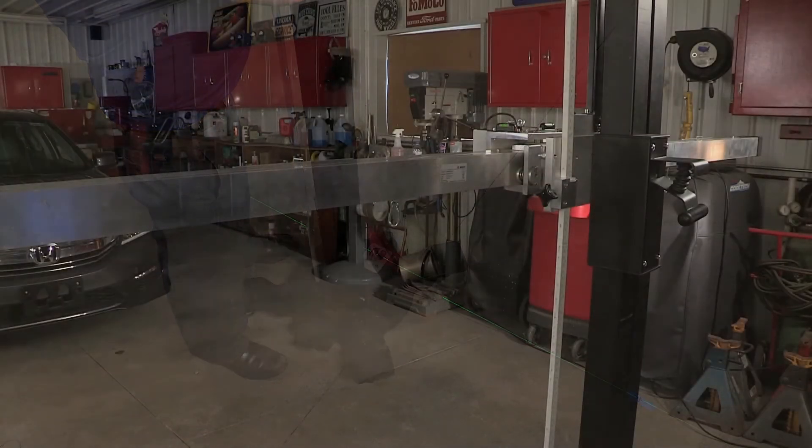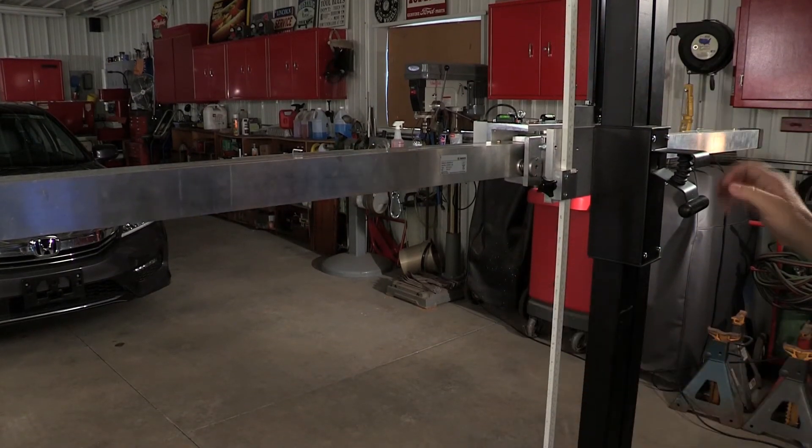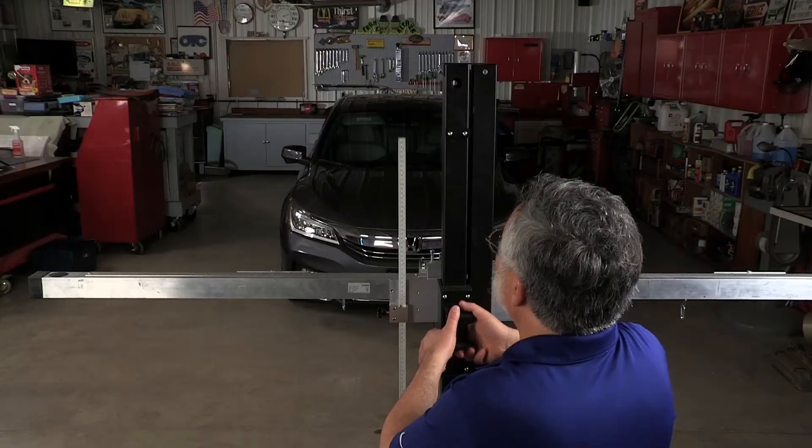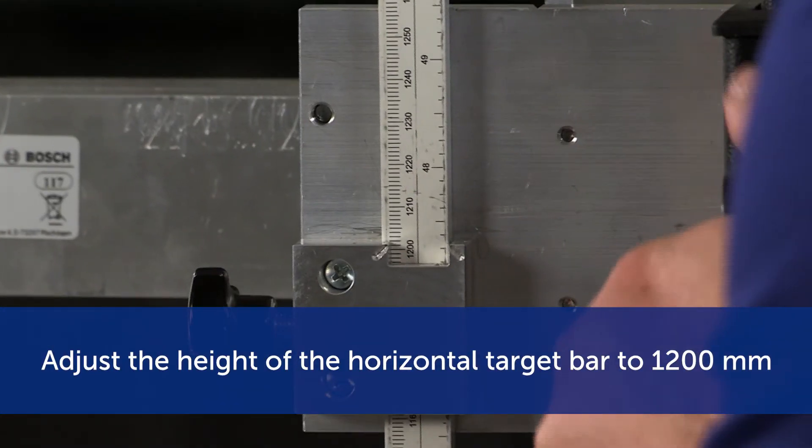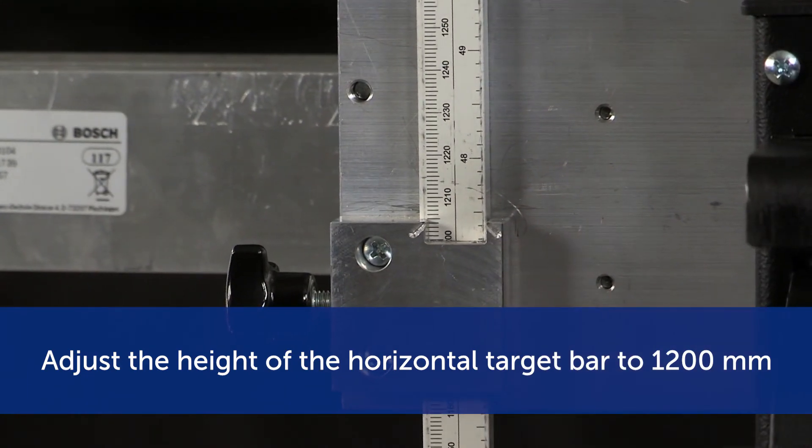Now we are going to do the fine adjustment of the crossbar according to the vehicle's specific target height. Ensure that the ruler is touching the floor. Adjust the horizontal target bar to a height of 1200 millimeters using the ruler shown in the picture located on the left side of the horizontal target bar.